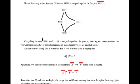Everything between 01101 and 11111 is merged together. So, blocking out maps actually preserve this between this property of partial orders. And actually because of that preserve these arrows of partial order.